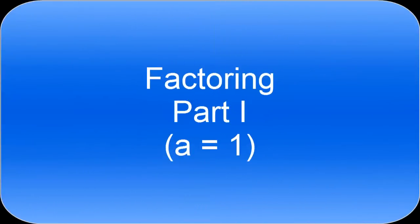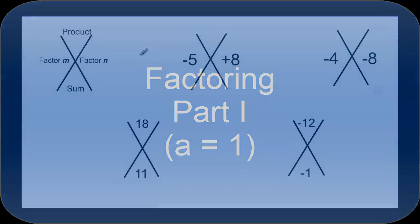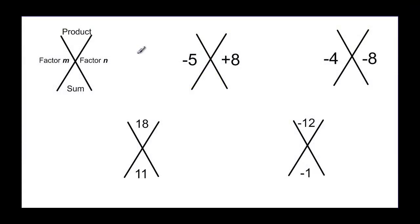This video is part one of factoring. To begin with we want to use a process called X-factoring. In the top of the X we're going to put a product, and in the bottom of this X we're going to put a sum, and then on either side is where we're actually going to find our factors. It works this way: factors m times n multiply to get the product, and m plus n add to get the sum.